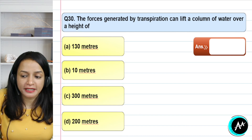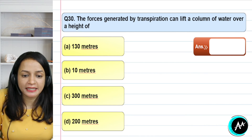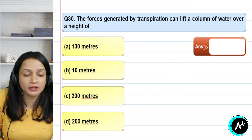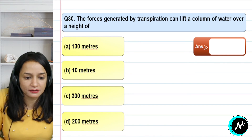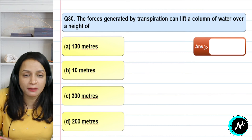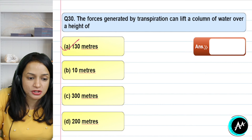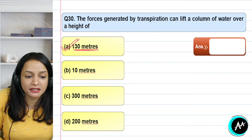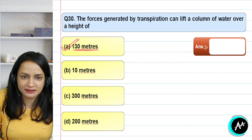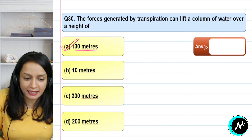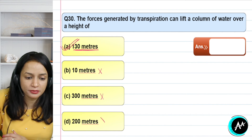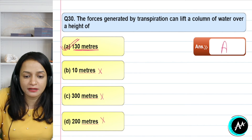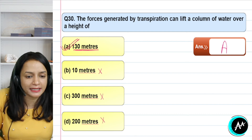Question 30: the force generated by transpiration can lift a column of water over a height of how much? The transpiration pull force can pull water upward to a great height in a plant. The first option is 130 meters — that is the correct option; more than 100 meters is achievable. Option B is wrong, option C at 300 meters is too much, and option D of 2 meters is also too high an underestimate. The correct answer for question 30 is option A — 130 meters.